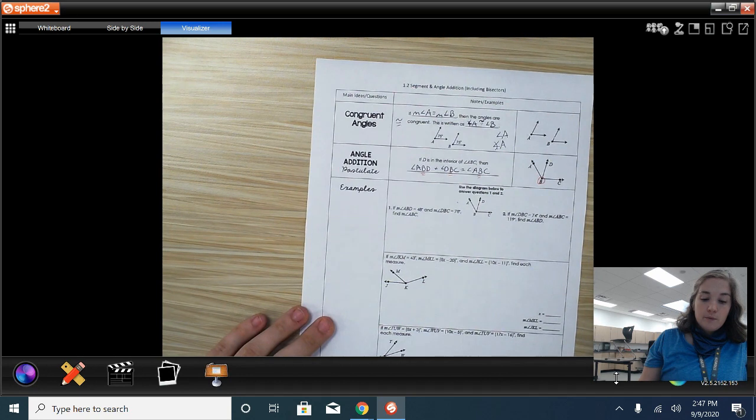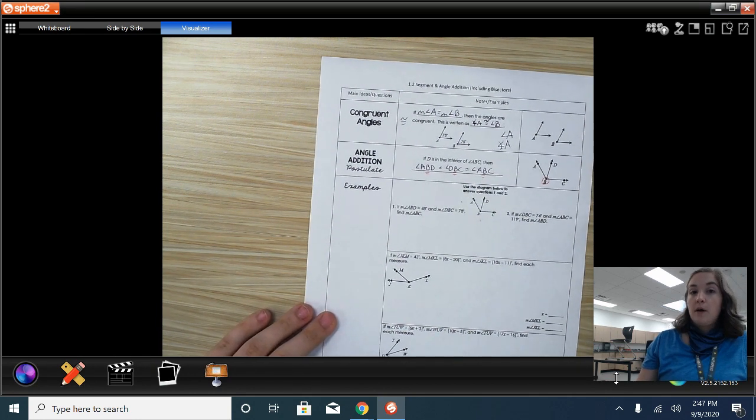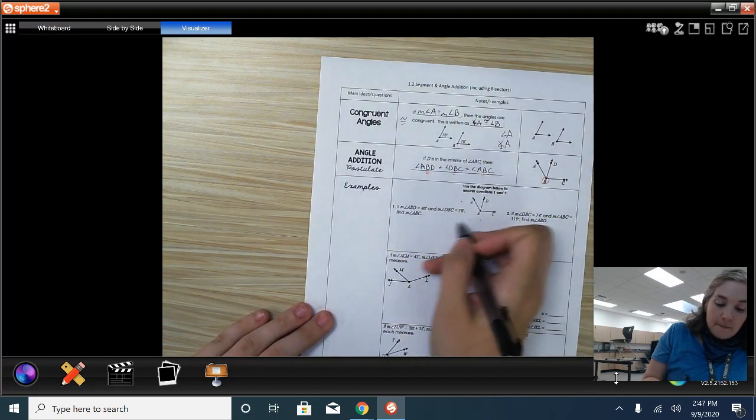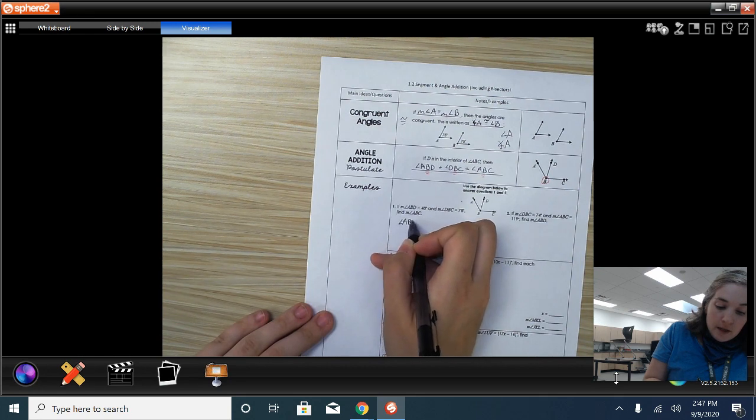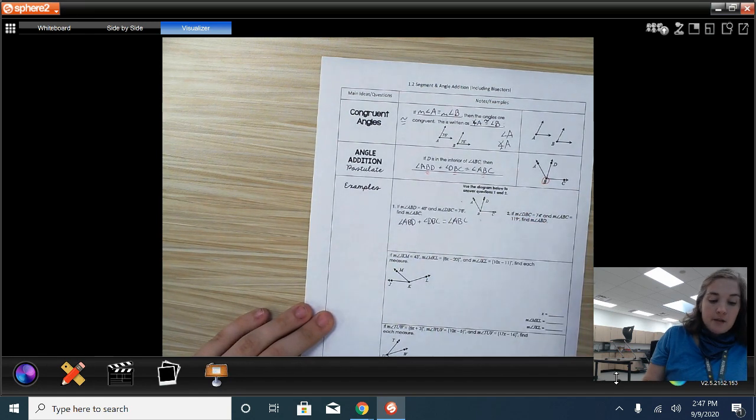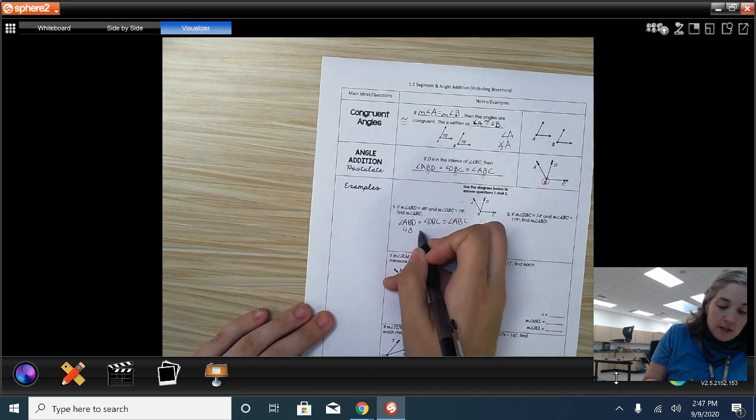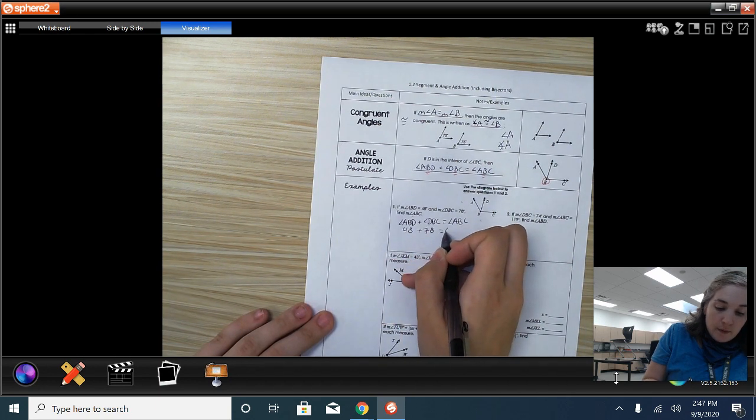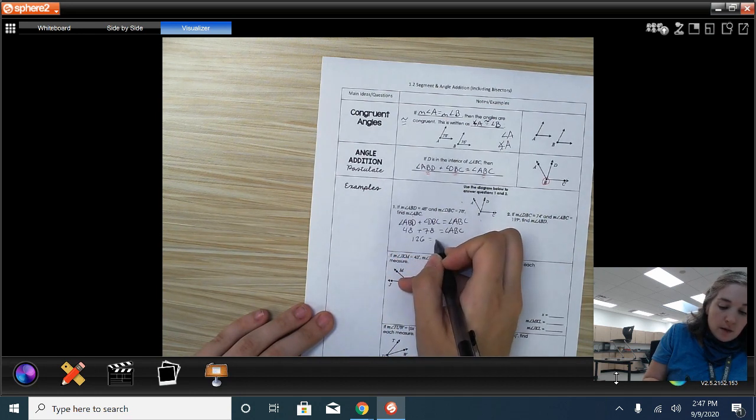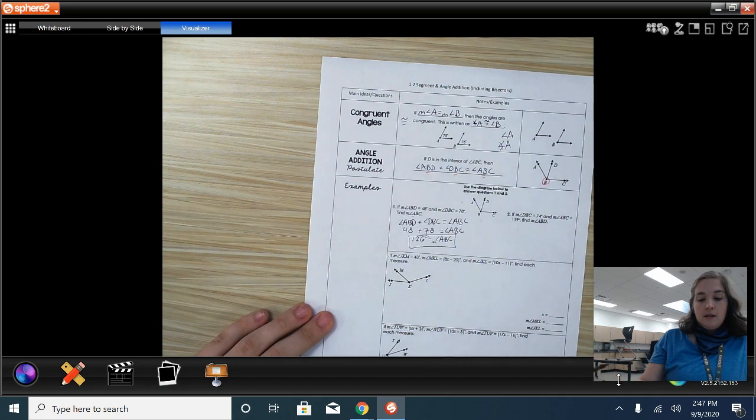When we take a look at our first example here, I use the same picture to try and keep it simple because I don't want you getting too hung up on naming angles. It's a little weird and we're going to get more into it. We've got the measure of angle ABD. Angle ABD plus angle DBC is equal to angle ABC. We want to find the measure of angle ABC. So, we are starting with 48 for ABD and 78 for DBC and we want to find angle ABC. So, when I add these together, I get 126 is equal to the measure of angle ABC.